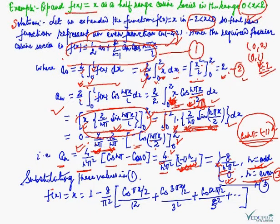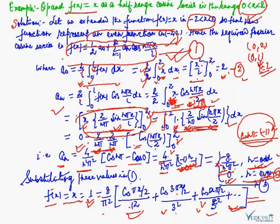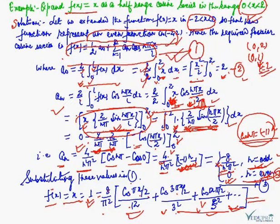Substituting the values of a₀ = 2 and aₙ into the first equation, the half-range cosine series is: f(x) = x = 1 - (8/π²)[cos(πx/2)/1² + cos(3πx/2)/3² + cos(5πx/2)/5² + ...] and so on. This is our required half-range cosine series. In a similar fashion, if the question asks for a sine series, we can apply the sine series formula. This is how the half-range sine or cosine series of any function can be obtained.